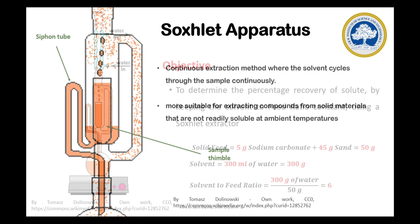The mixture is kept inside the sample chamber. The filter paper acts like a thimble, as it is porous in nature. 300 ml of water is taken as solvent and kept in the round bottom flask. The ratio of solvent to solid feed is 300 grams of water by 50 grams of solid feed, which gives 6 as the solvent to feed ratio.